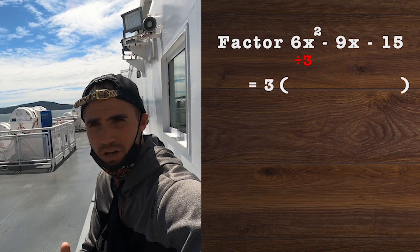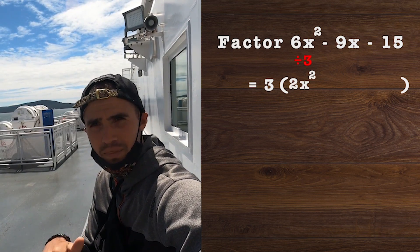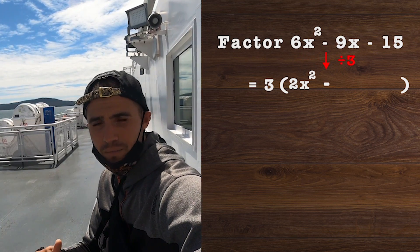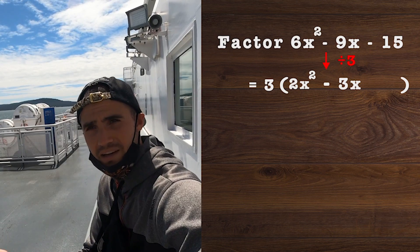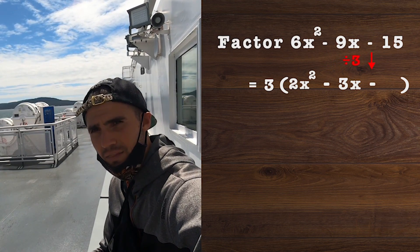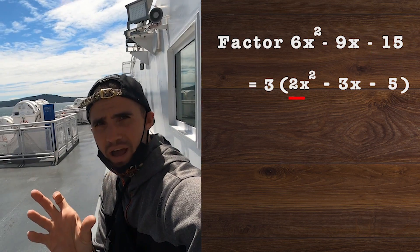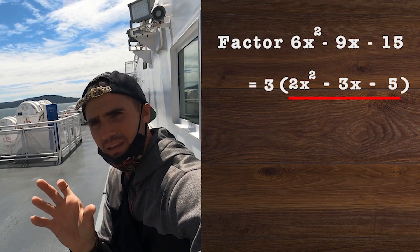Then what would we be left with in the brackets? We just have to take all of the terms and divide them by that 3. If we take 6x² divided by 3, we end up with 2x². The negative 9x divided by 3 gives us 3x, and the 15 divided by 3 gives us 5.